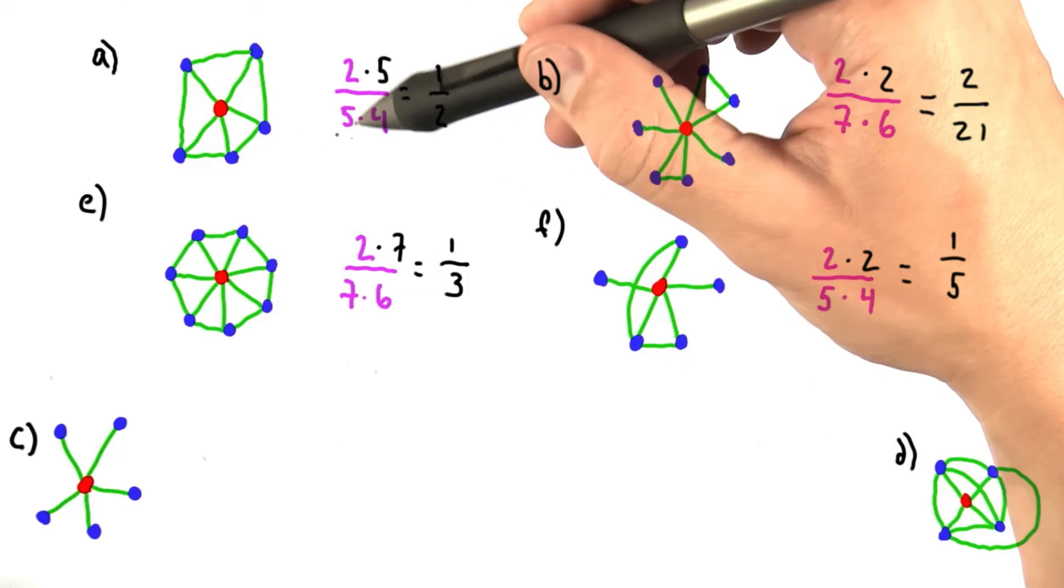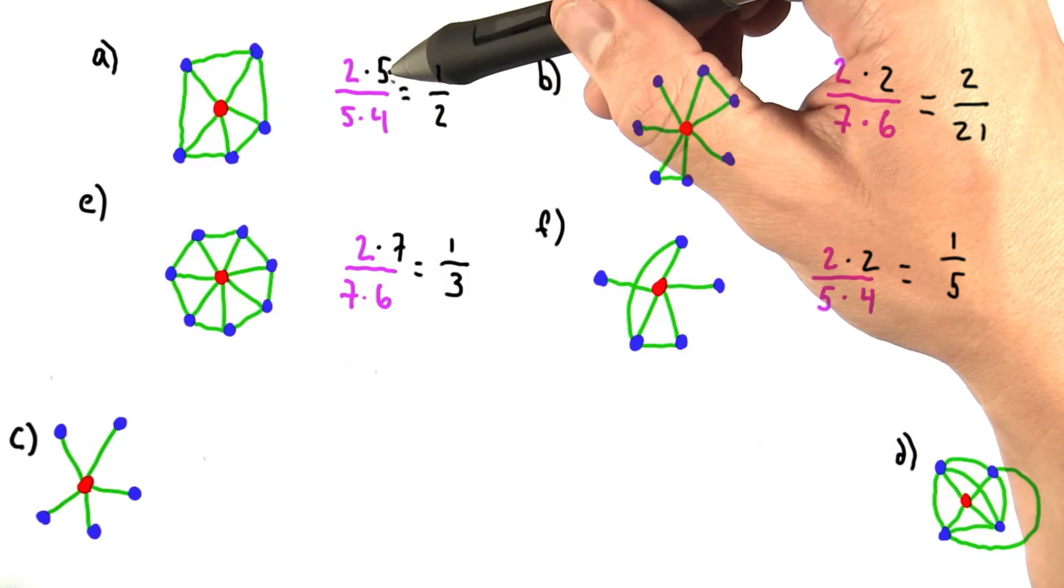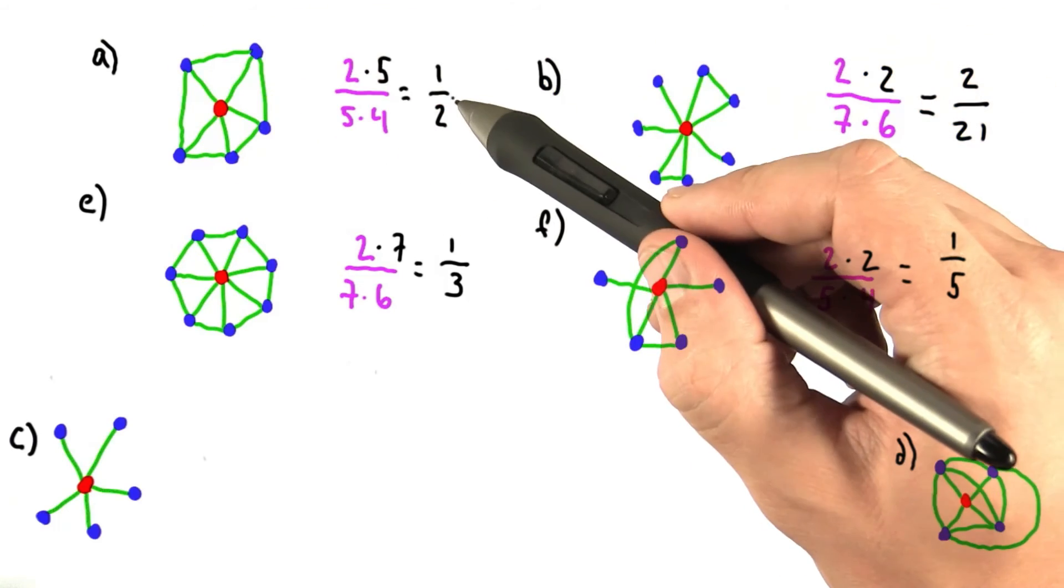For A, the degree of the red node is five, and there are five links between the neighbors. So we get a clustering coefficient of a half.